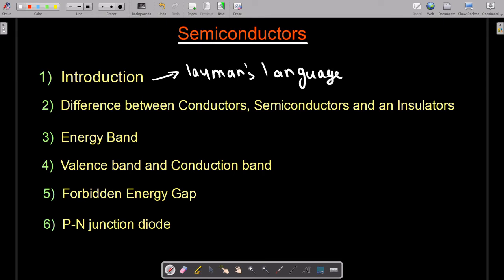The second topic is the difference between conductors, semiconductors, and insulators. I explained the difference between conductors and insulators in course one, so I won't go into that depth here. I'll just explain how semiconductors are different from conductors and insulators. We'll have a little idea to give you...